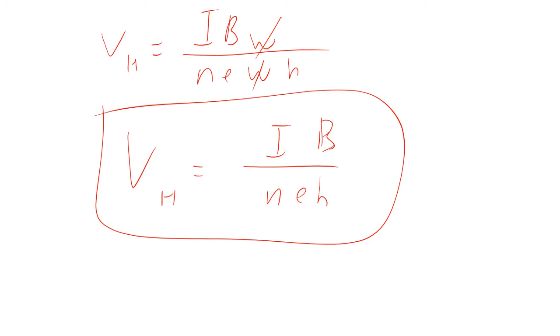I, the current going through there, B is the applied magnetic field. That is the charge of the thing that's moving, so either electrons or protons or what have you. And H is the thickness of your conductor. So N is the charge carrier density.